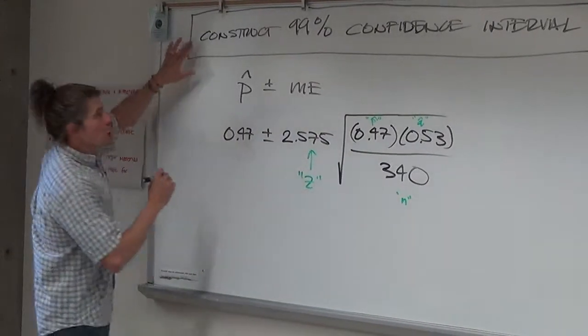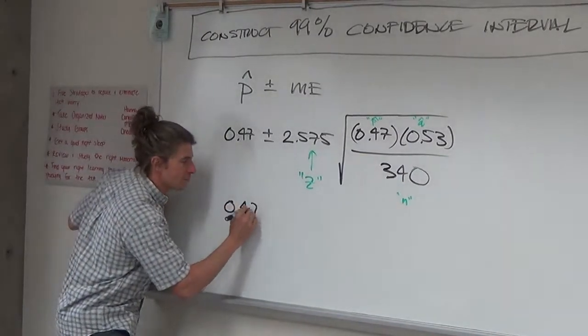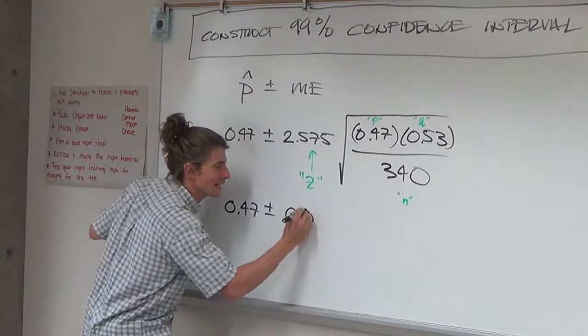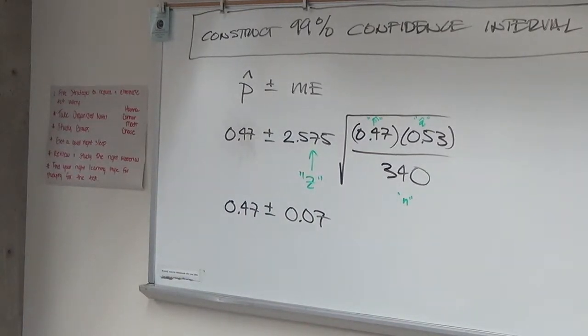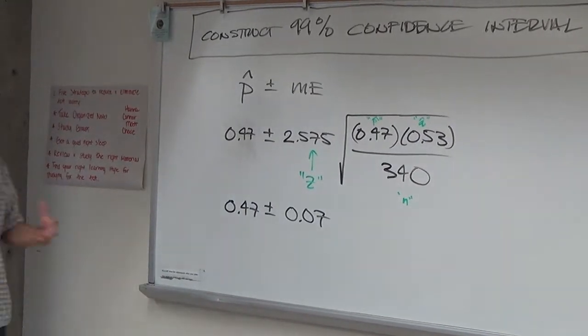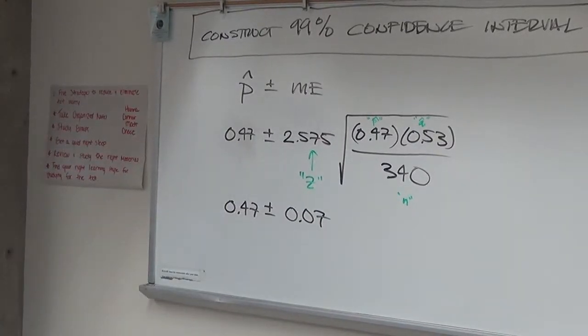Our 99% confidence interval is 47% plus or minus 7%. Now, when you say that, it has a meaning. What is the meaning of 47% plus or minus 7%? You probably can answer this based on the amount of harping I gave you guys in 243. Give it a shot. What does the plus or minus 7% take care of for us?